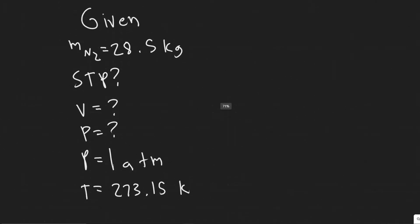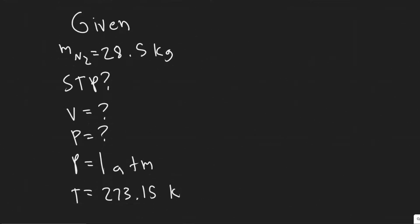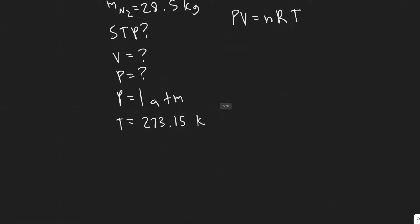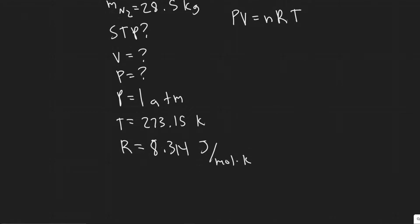We're going to solve this using the ideal gas law: pressure times volume equals N (number of moles) times R (the gas constant) times T. R is the gas constant, and its value is 8.314 joules per mole·Kelvin. This is basically all you need to solve the problem.